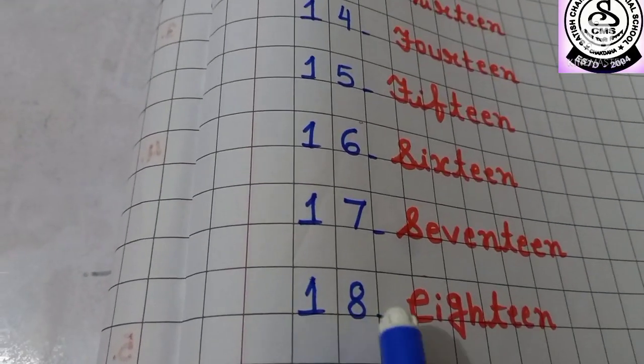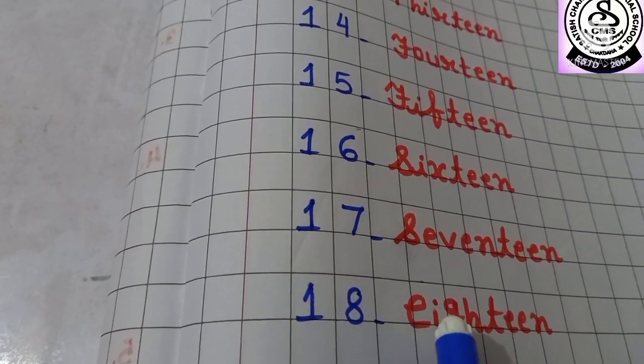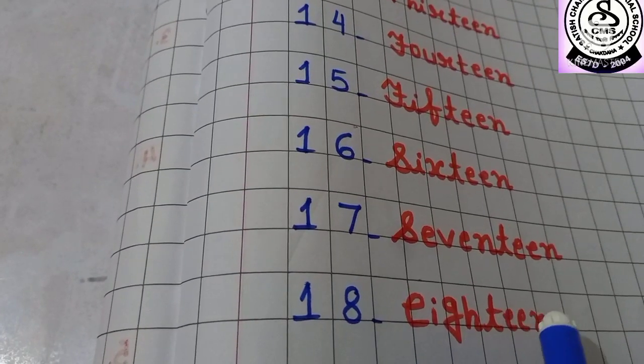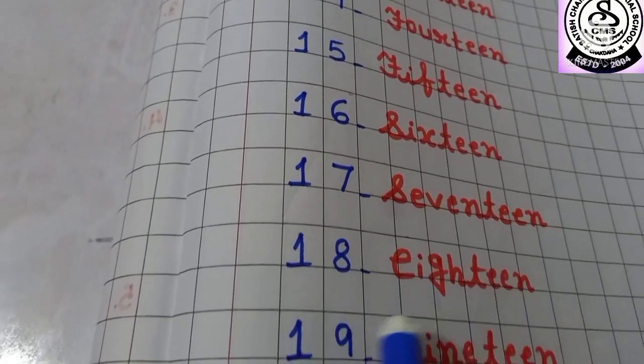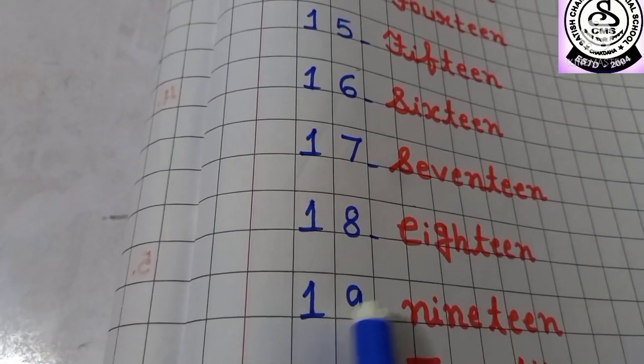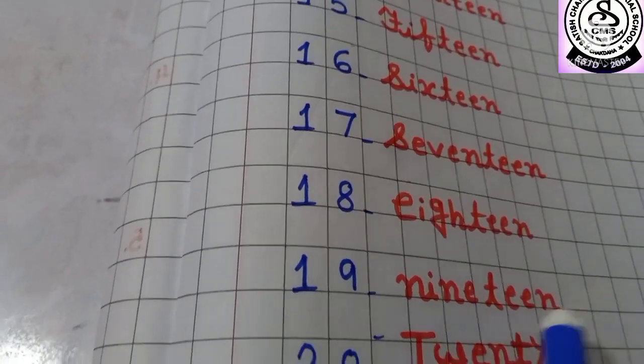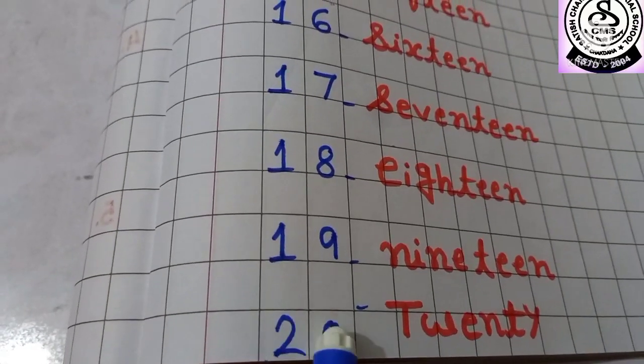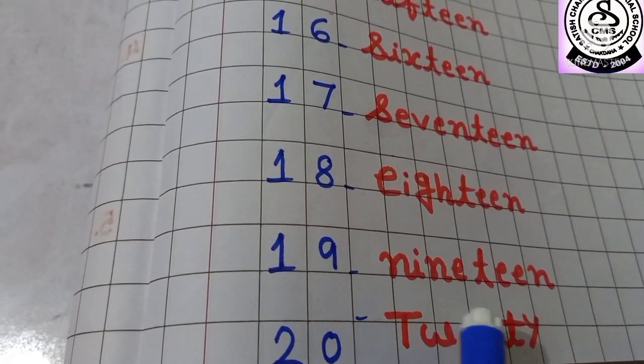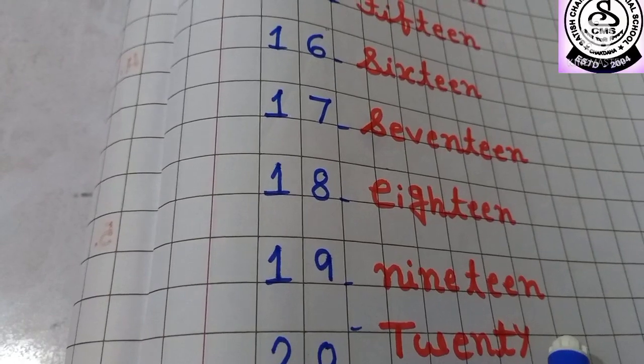Then 1, 8, 18. E-I-G-H-T-E-E-N, eighteen. Then 19. 1, 9, 19. N-I-N-E-T-E-E-N, nineteen. Then 2, 0, 20. T-W-E-N-T-Y, twenty.